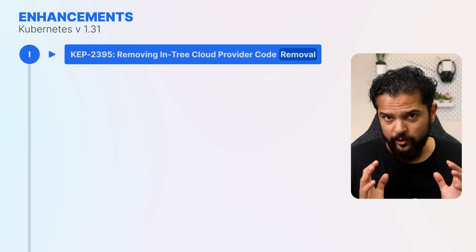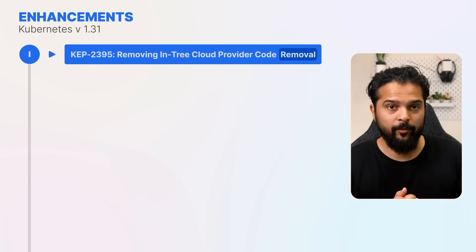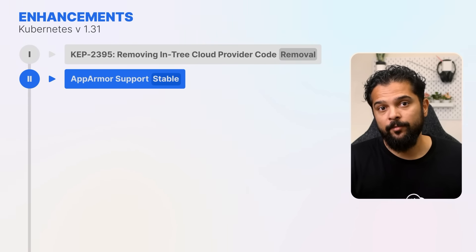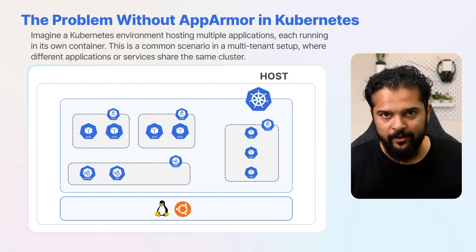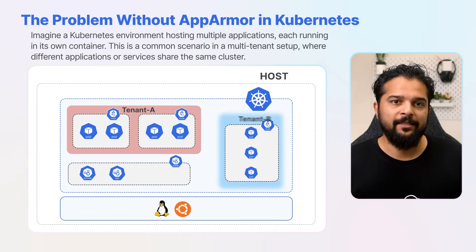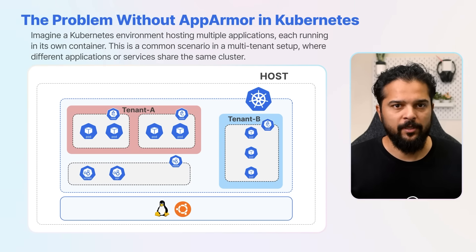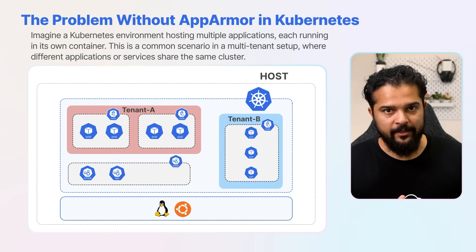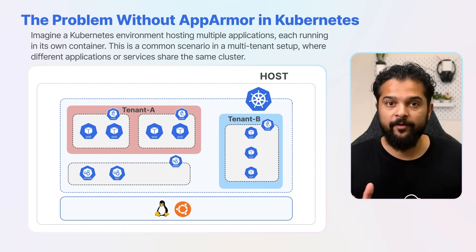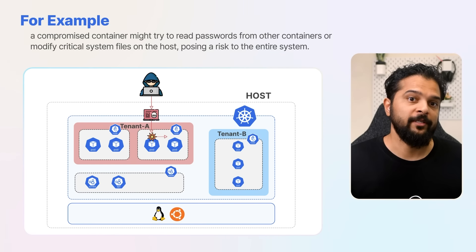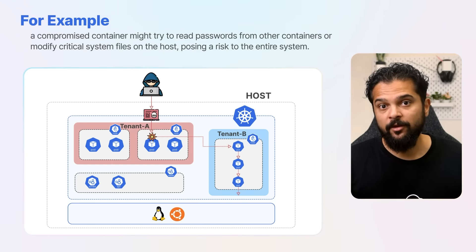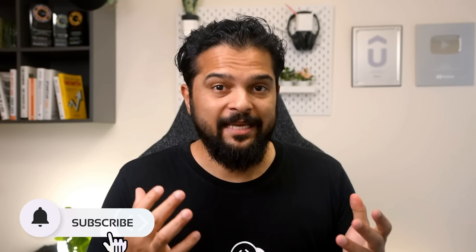Next, we'll look at one of the most useful features graduating to stable in the 1.31 release: AppArmor support in Kubernetes. Imagine a Kubernetes environment hosting multiple applications, each running in its own container — a common scenario in a multi-tenant setup. If one of these containers gets compromised, it could potentially access sensitive data or interfere with others. For example, a compromised container might try to read passwords from other containers or modify critical system files on the host, posing a risk to the entire system.